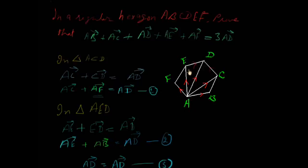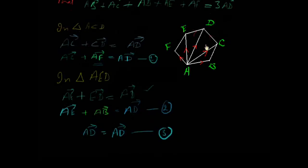AE vector plus ED vector is equal to AD vector as per the triangle law of vectors. Now, we change this vector with AB vector because ED vector is equal to AB vector. This is the second point.